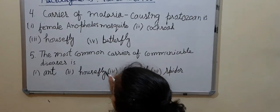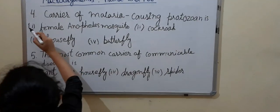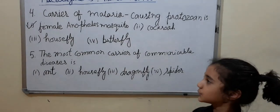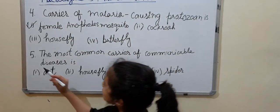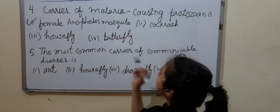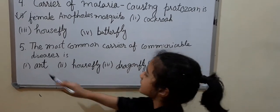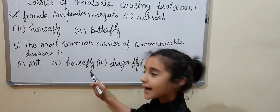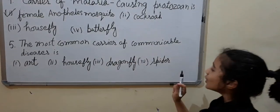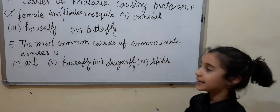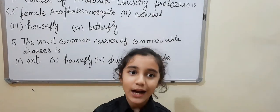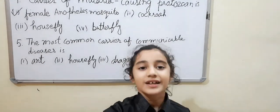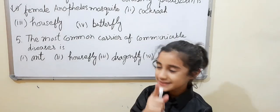The correct answer is female Anopheles mosquito. Question number 5: The most common carrier of communicable diseases is — ant, housefly, dragonfly, or spider. Your time starts now.